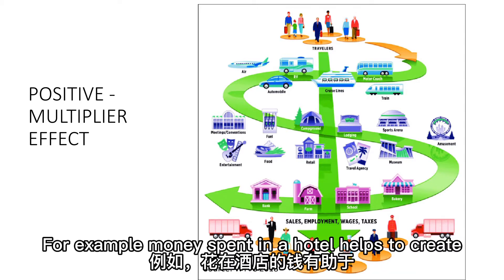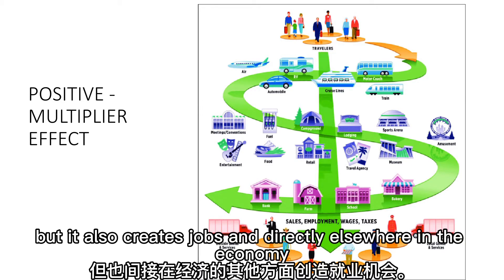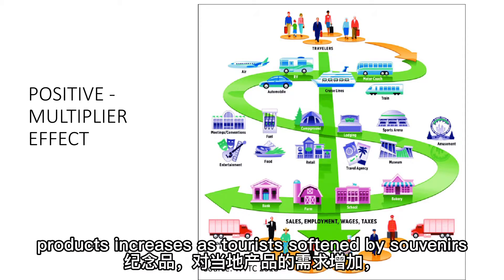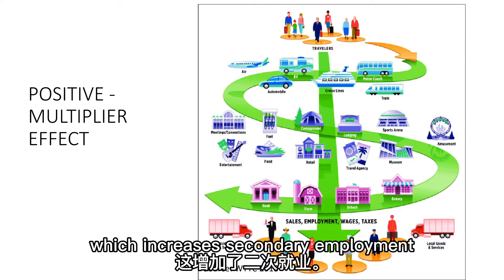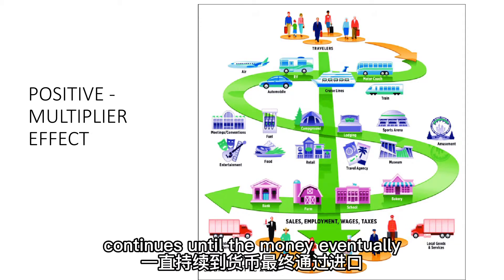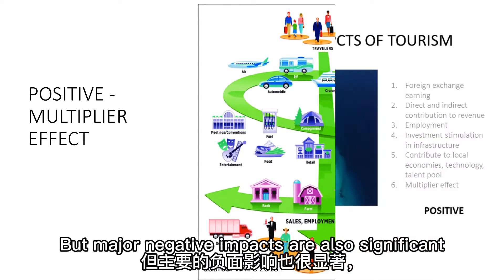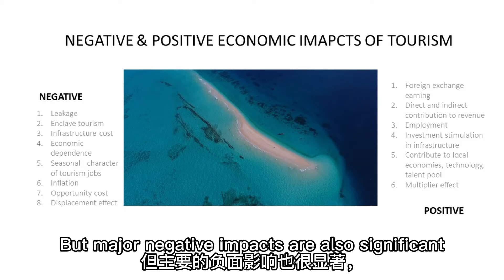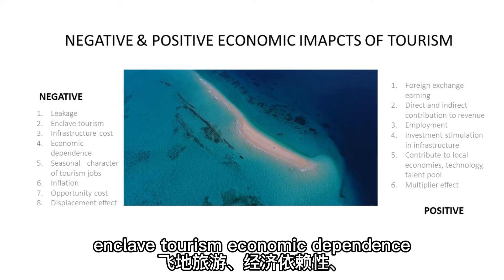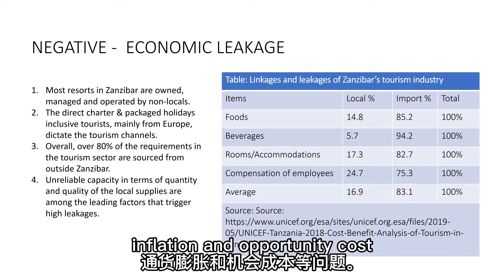The demand for local products increases as tourists buy souvenirs, which increases secondary employment. The multiplier effect continues until the money eventually 'leaks' from the economy through imports — the purchase of goods from other countries. But major negative impacts are also significant, including problems of leakage, enclave tourism, economic dependence, seasonal character of tourism jobs, inflation, and opportunity cost.